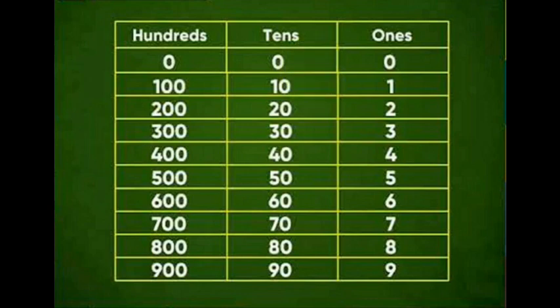Then the 1's column: 0, 1, 2, 3, 4, 5, 6, 7, 8, 9. A 1-digit number is known as 1's.